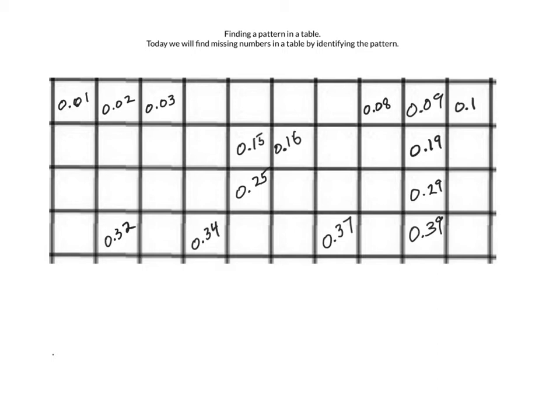And if we look at 3 hundredths, if we went over here, not across, but diagonally down to here, we know that this is going to be 13 hundredths, so this one would be 14 hundredths. So once you recognize the pattern, it's pretty easy to go through and fill out this entire table.